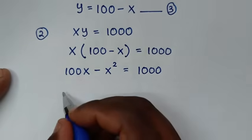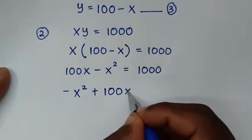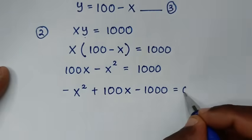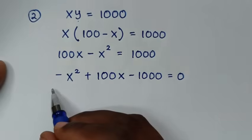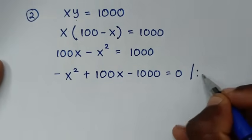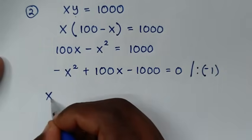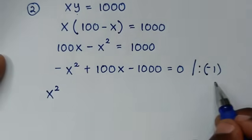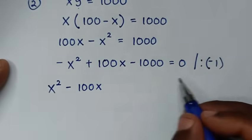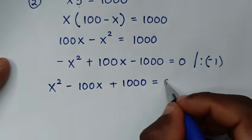We rearrange to get: negative x squared plus 100x minus 1000 is equal to 0. To make the x squared term positive, we divide the whole equation by negative 1, giving us x squared minus 100x plus 1000 is equal to 0.